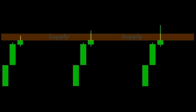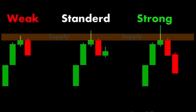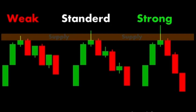In forex trading, a supply zone is a price area where selling interest is strong enough to overpower buying interest, causing prices to fall. The strength of a supply zone can be gauged by several factors. One: price reaction. A strong supply zone typically leads to a sharp and significant price decline when it is tested. The more aggressive the sell-off, the stronger the supply zone is considered to be.